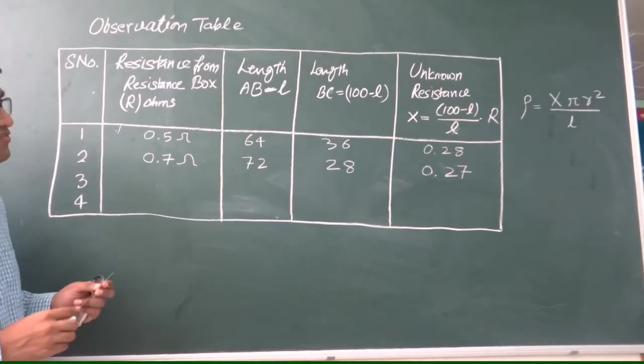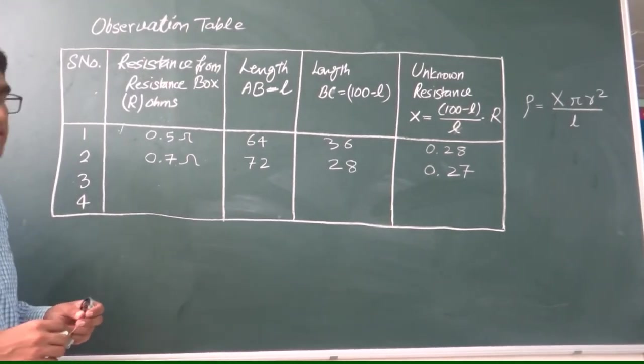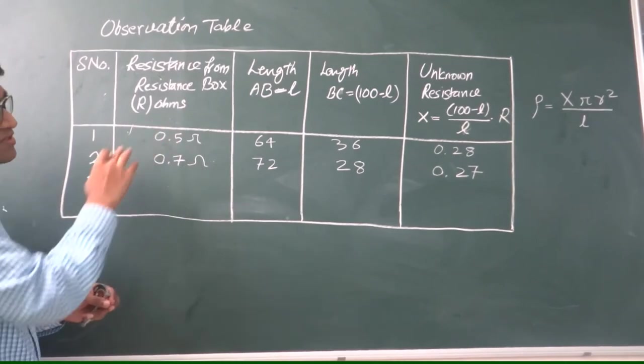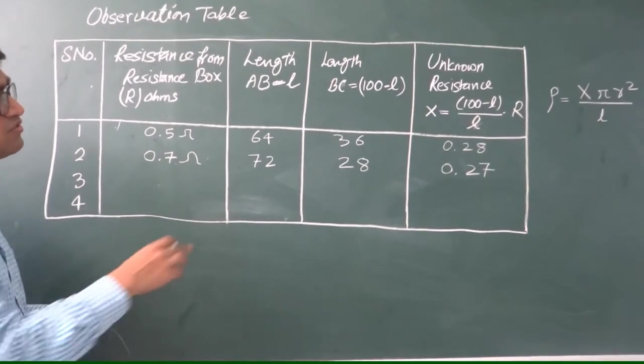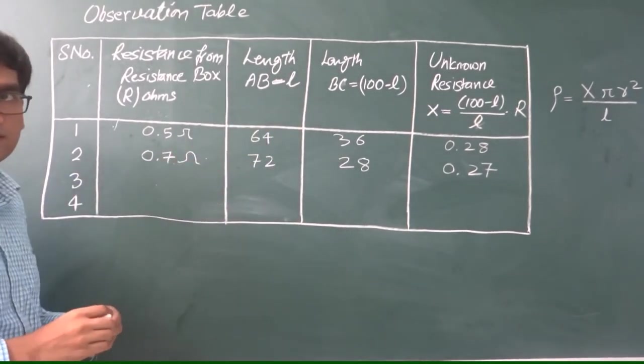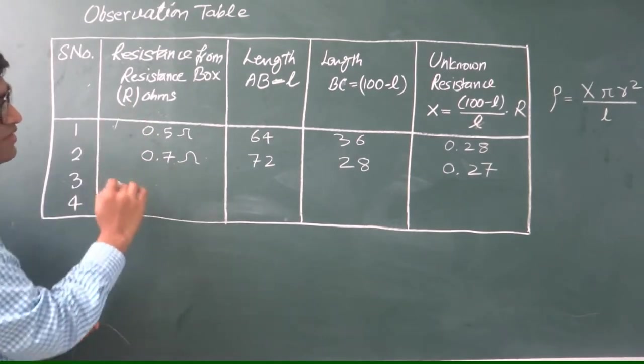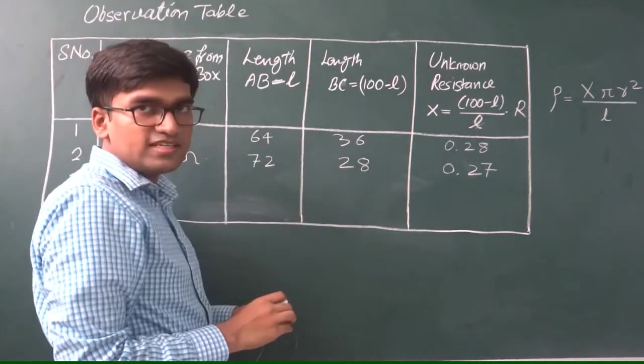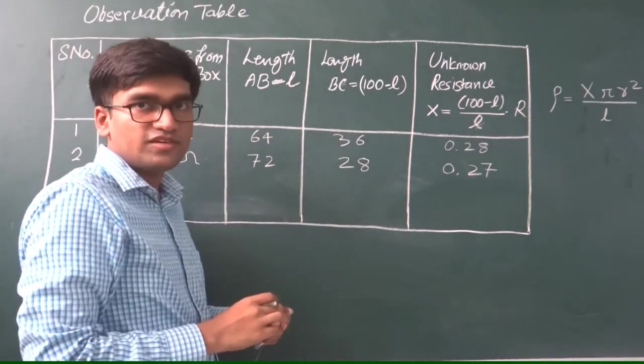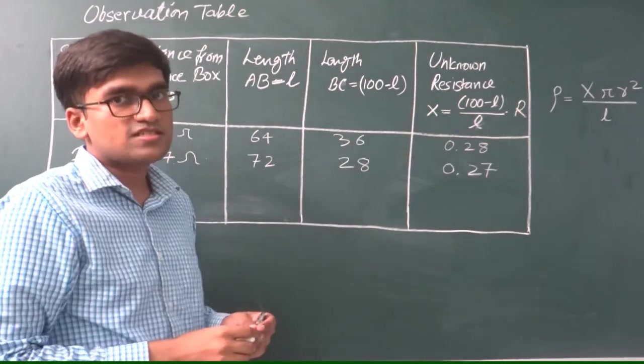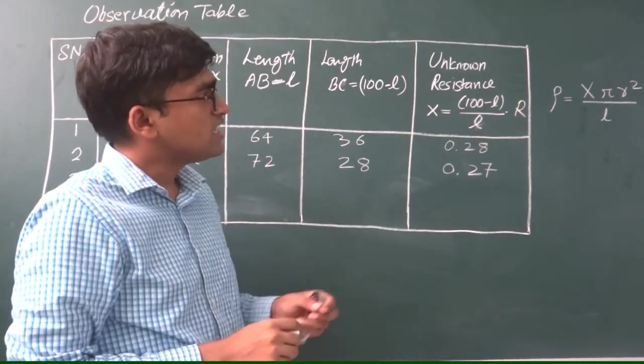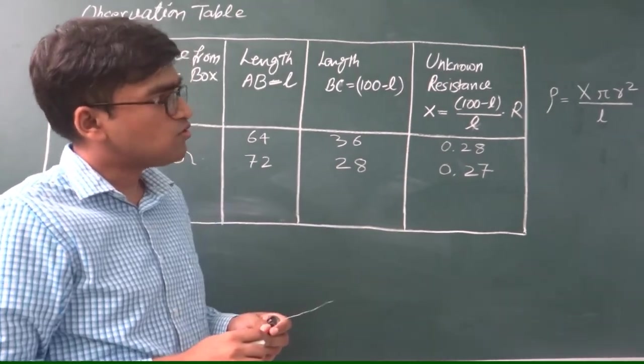To calculate the specific resistance of a given wire, we will use the observation table as was for determining the unknown resistance. So in the similar way, we will calculate the value of x using some five to six sets of readings. So the formula for the specific resistance or the resistivity is x into pi r square over L.